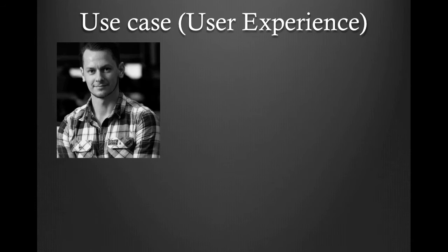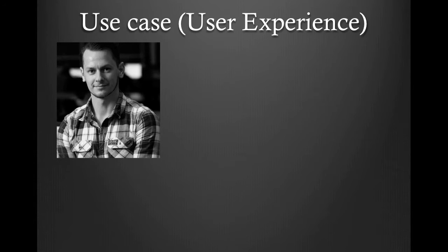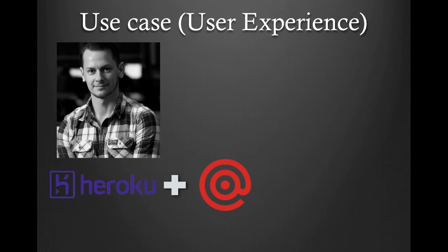Let's move on to the next use case. Our UX developer is interested in knowing how users are engaging with welcome emails by tracking clicks. We will again be using Heroku and Mailgun, but we'll also be using Keen.io. Keen.io is a great product for storing and visualizing data — you can make tangible charts and metrics with it using data obtained via these webhooks.